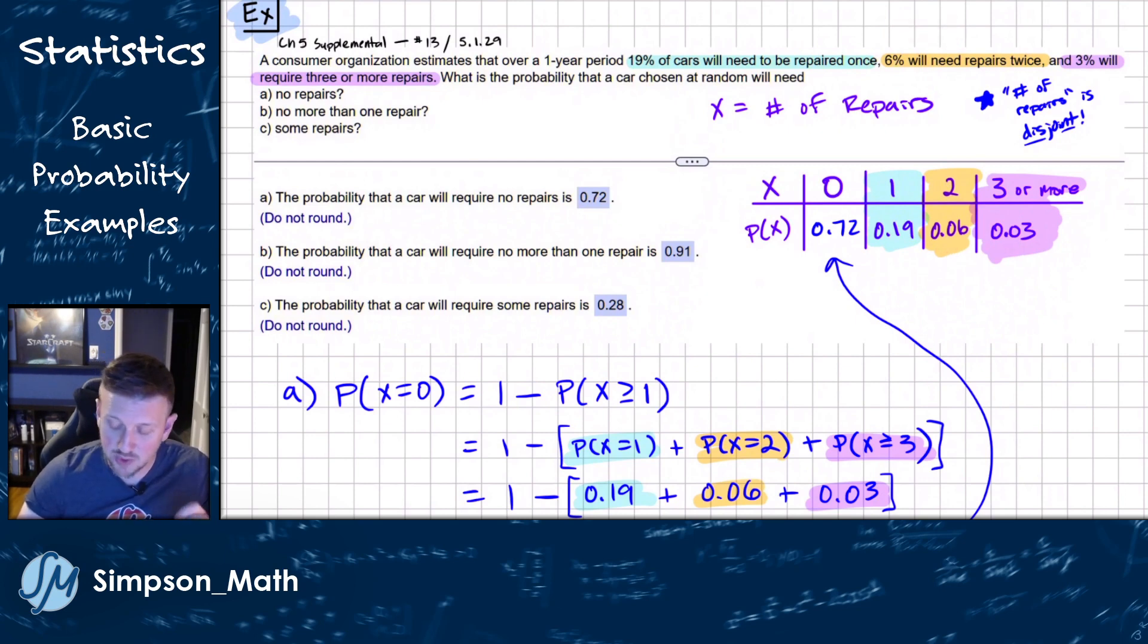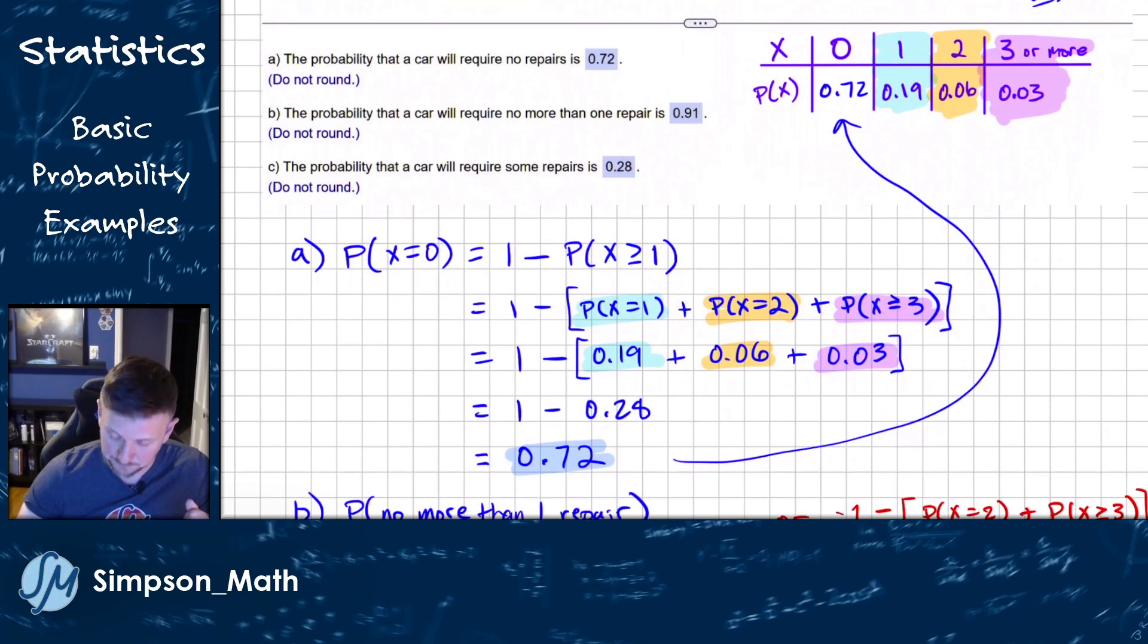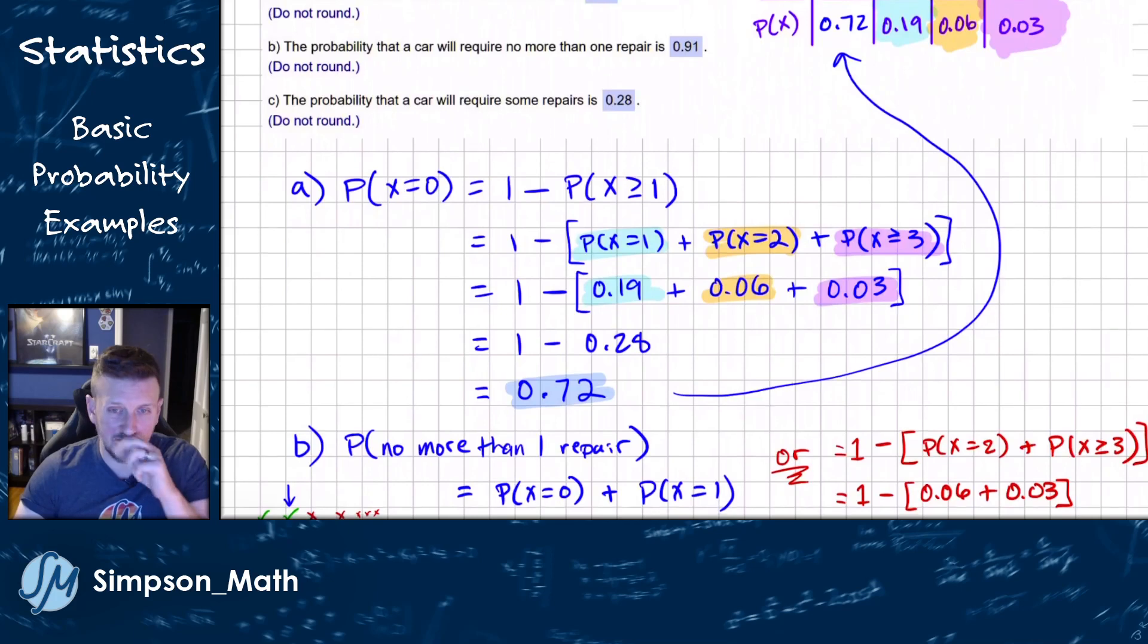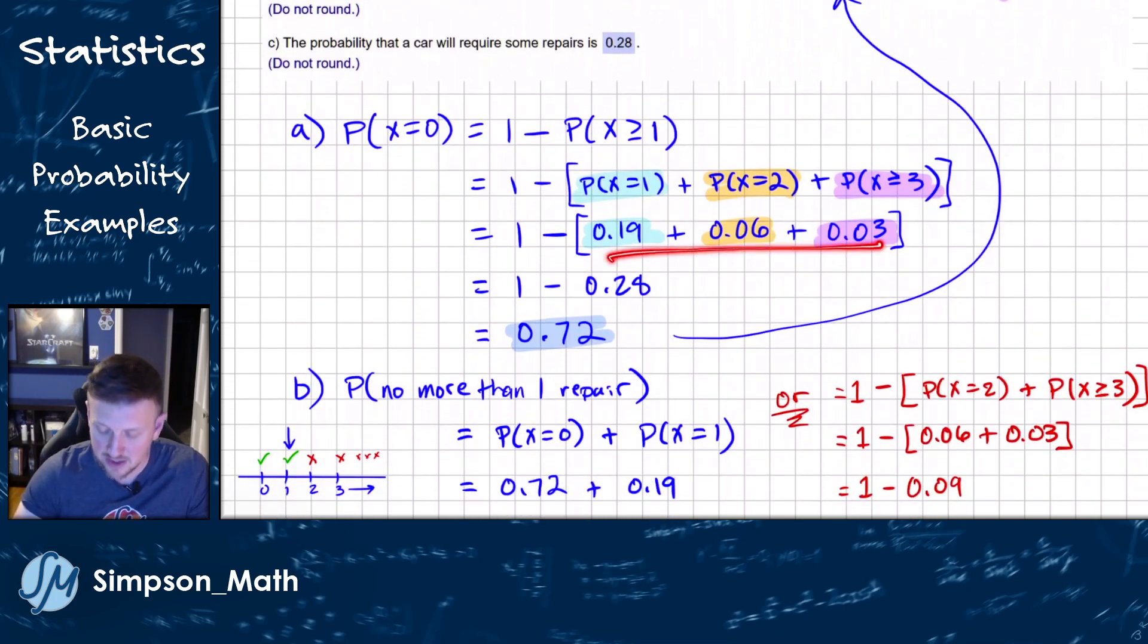So just be careful when it's single digit percents that we have that extra zero in there. That reads as 0.06 or six hundredths, not 0.6, which would be six tenths. So then we just add these up and we get 28%. One minus that gives us our 0.72.